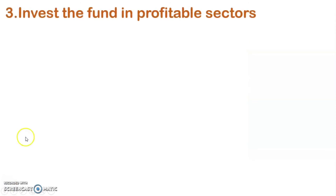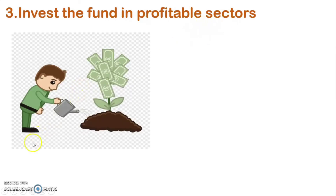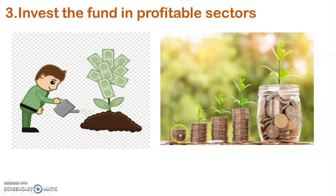The third and final function is to invest the fund in profitable sectors. An investor firstly collects his fund, secondly properly utilizes his fund, and thirdly invests the fund in profitable sectors. When a financial manager invests his fund, he must be concerned about earning profit and also capital recovery.